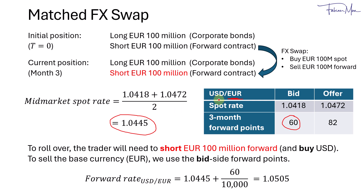To keep in mind: for a match FX swap, the spot rate is always based on the mid-market spot rate, which is the average of the bid and offer. For the forward points, you need to note whether you are buying or selling the base currency in the forward position. If you are buying the base, use the offer side. If you are selling the base, use the bid side forward points.